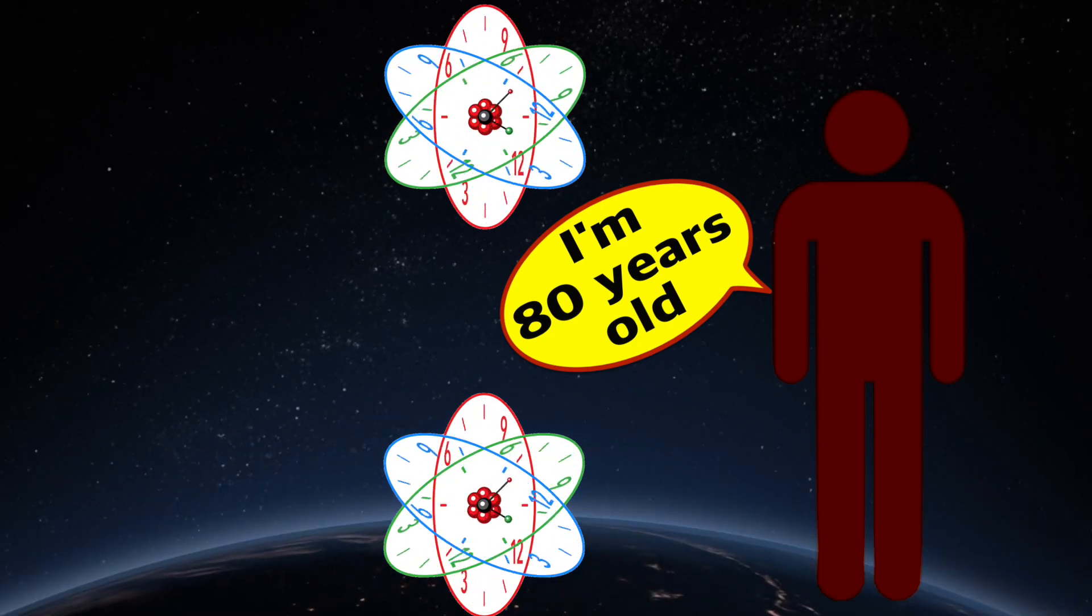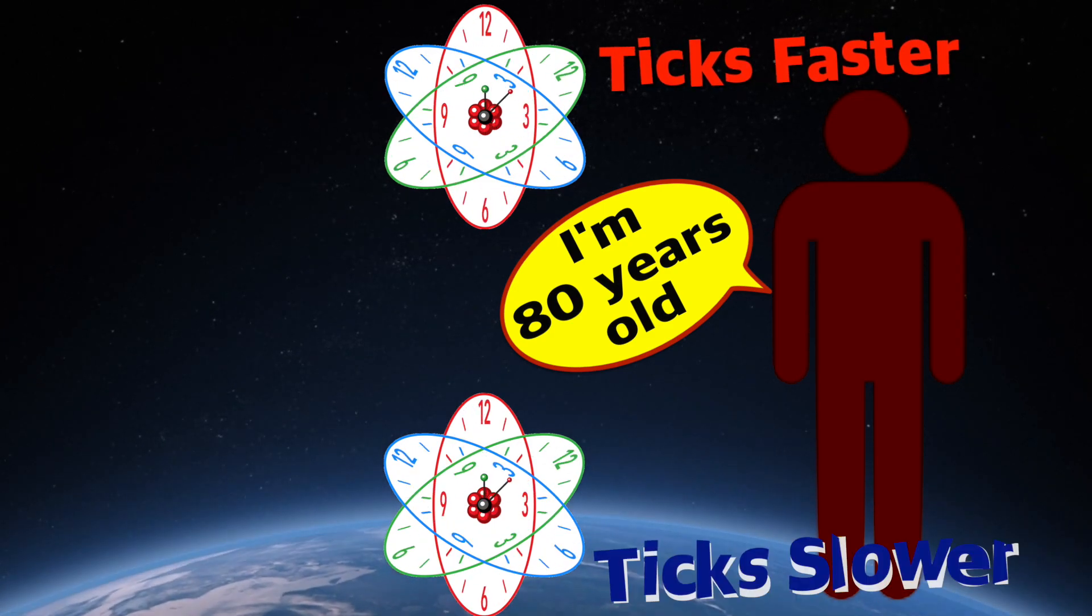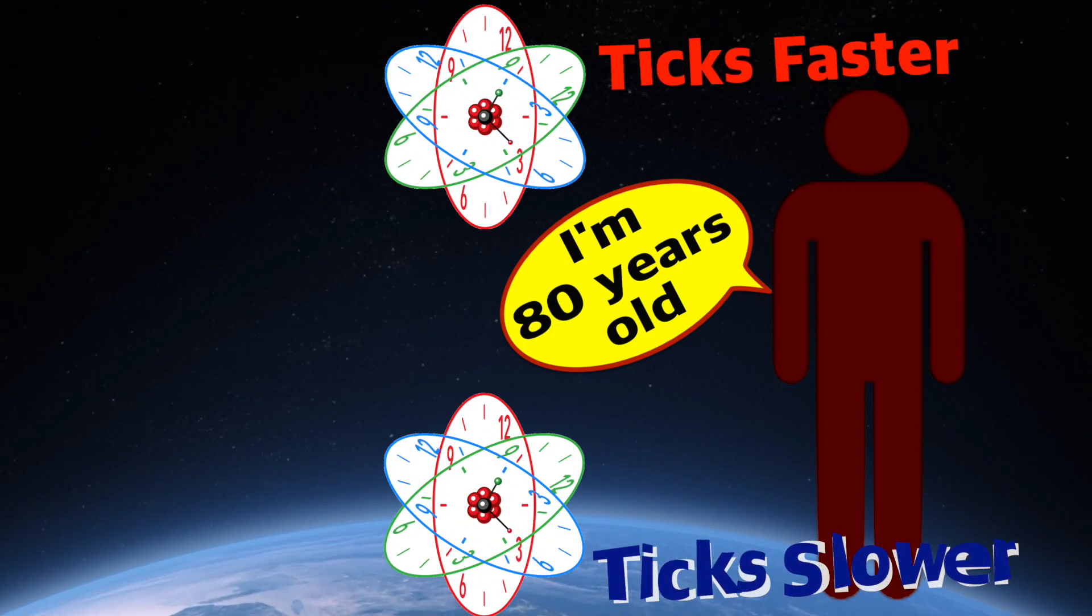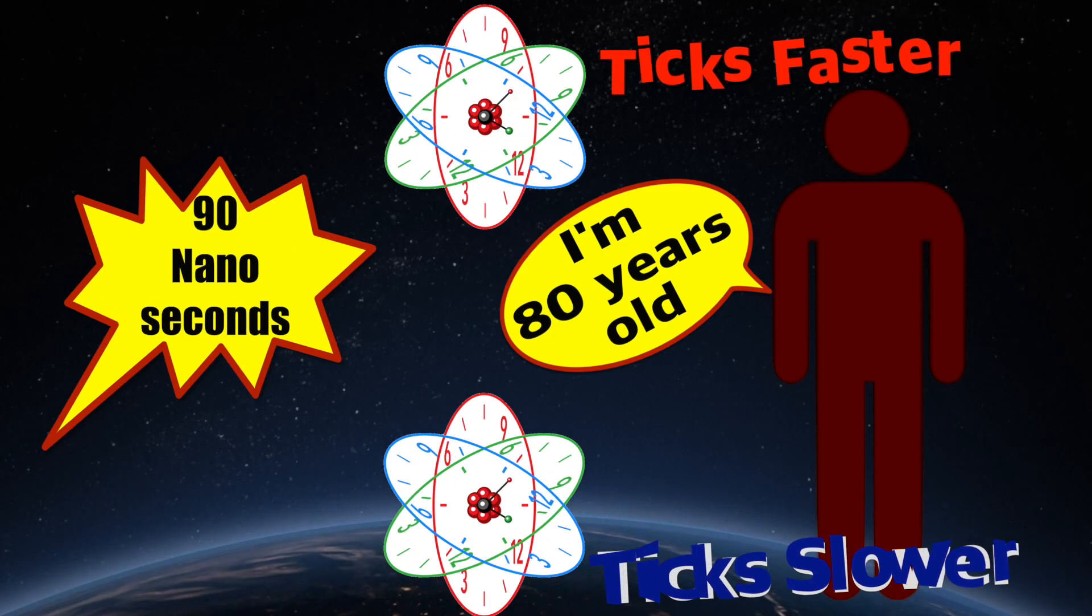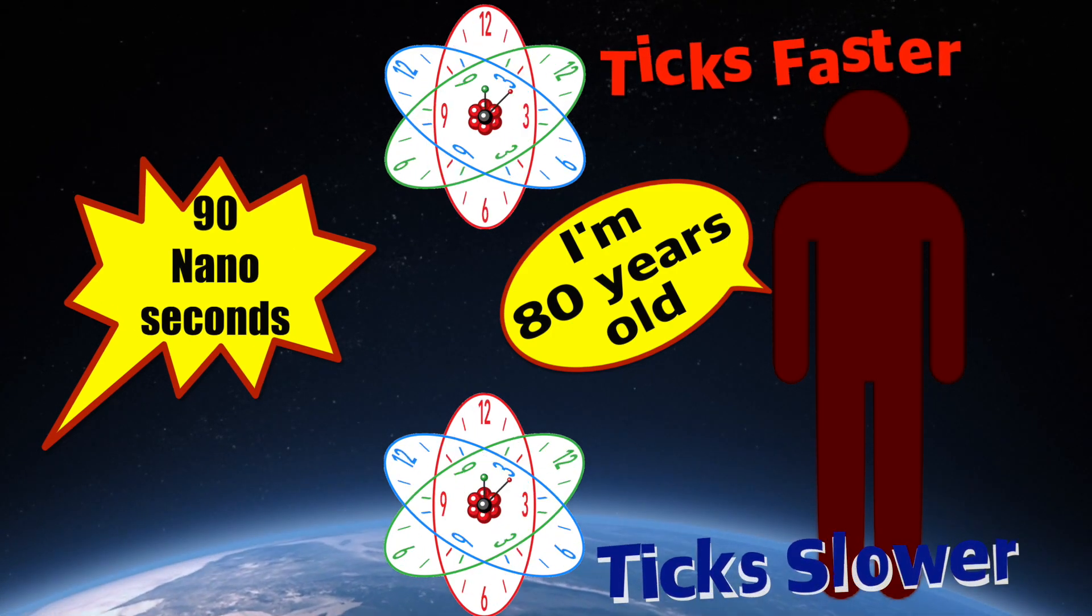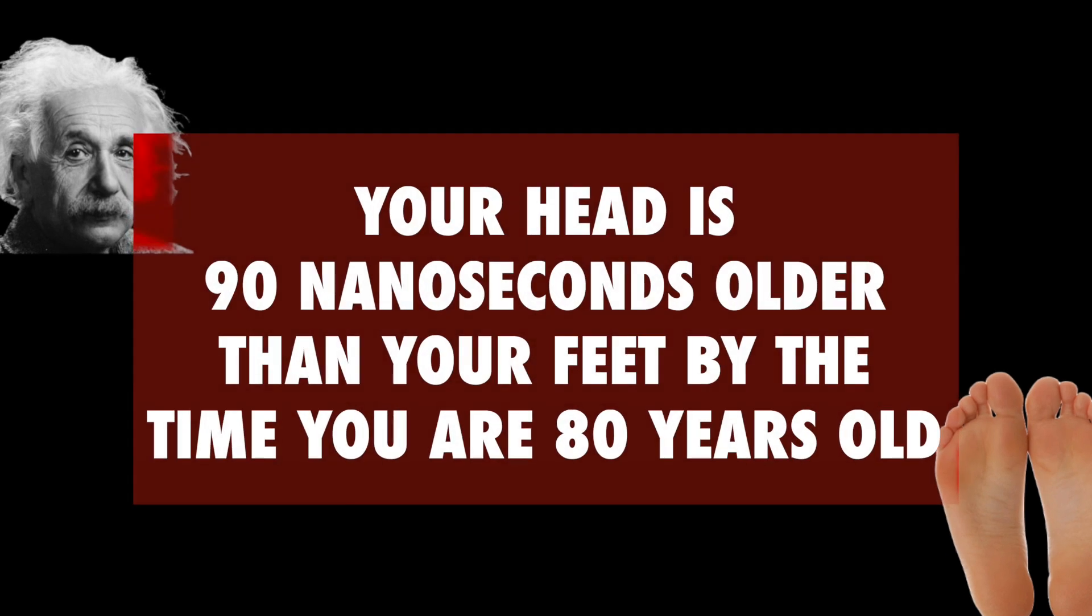The clock at the level of their head ticks a little bit faster than a clock that's placed at their feet. Over a lifetime of 80 years, the difference between these two clocks was 90 nanoseconds. This is a very, very small difference in the ticking times, but what it establishes is that in principle your head is 90 nanoseconds older than your feet by the time you turn 80 years old. Isn't that amazing?